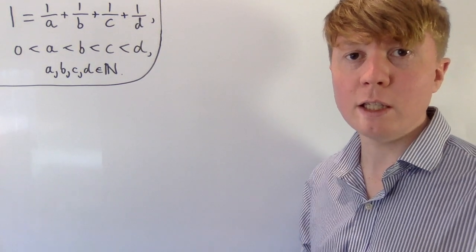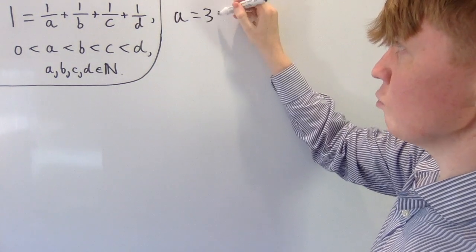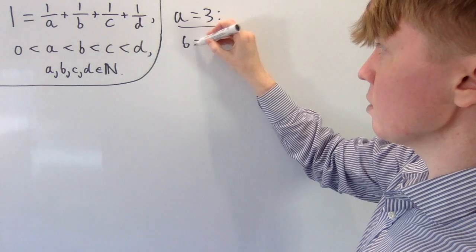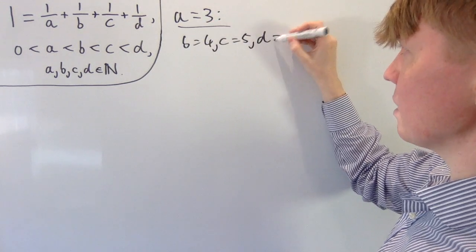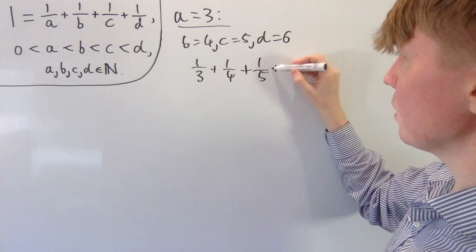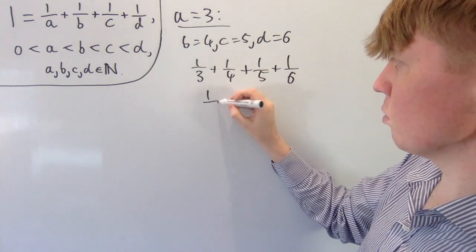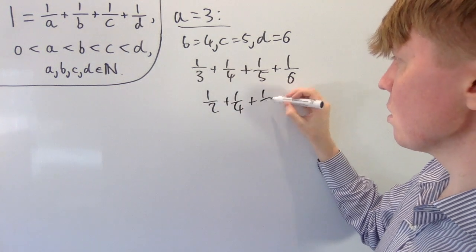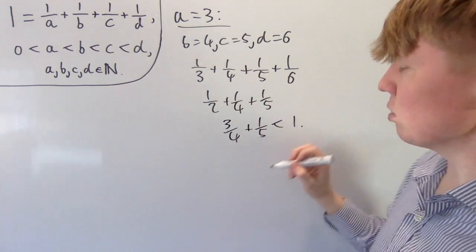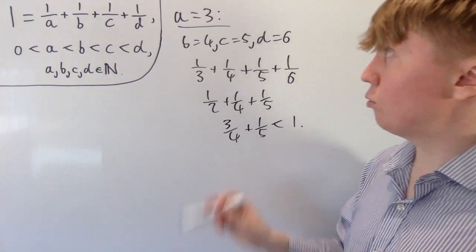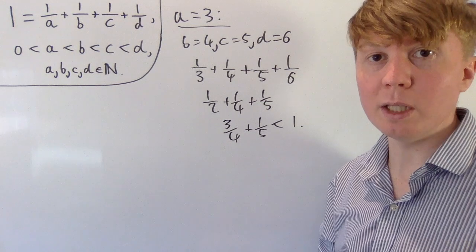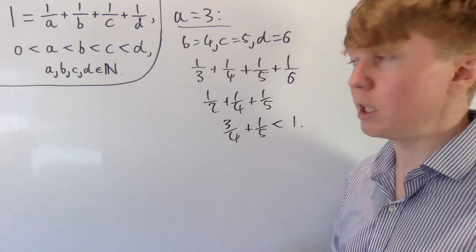Even if we just took a greater than or equal to three, let's consider what happens when a is three. Our best case scenario, since b, c, and d must be distinct, would be b is four, c is five, and d is six. So we get one third plus one quarter plus one fifth plus one sixth. We know one third plus one sixth gives you one half, then plus one quarter gives three quarters, and all you're left with is one fifth. So three quarters plus one fifth is less than one — the total sum is less than one.